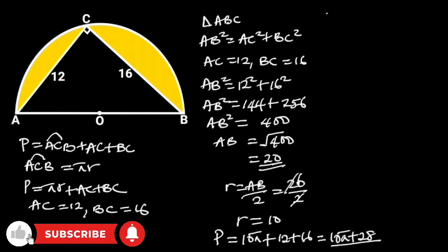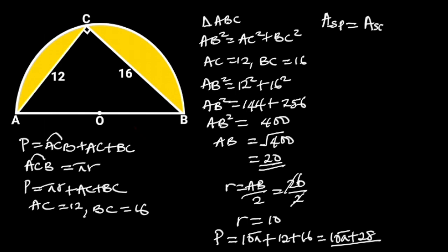To find the area of the shaded portion, the area of the shaded portion is equal to the area of the semicircle minus the area of the triangle. The area of a semicircle is equal to 1 over 2 pi radius squared.